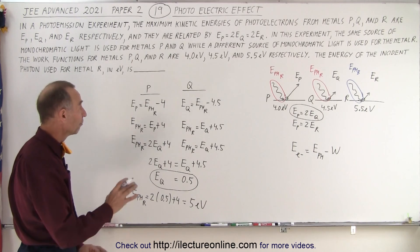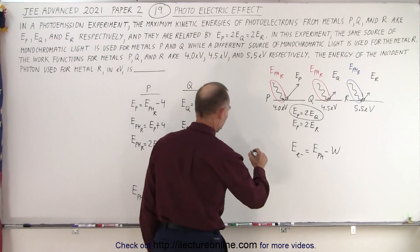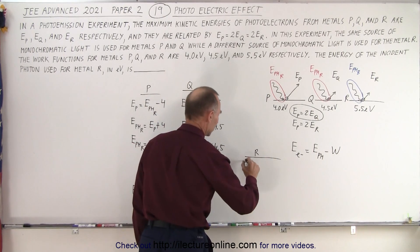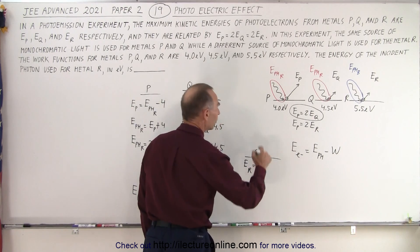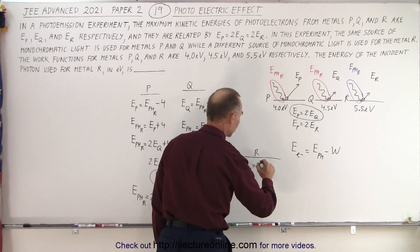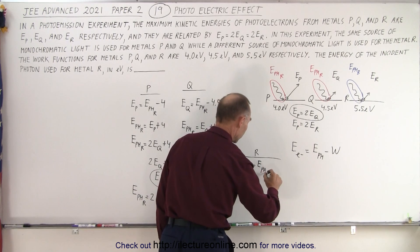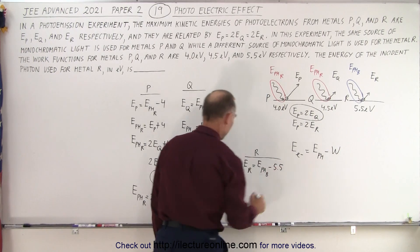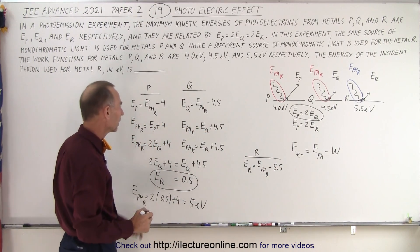Now we can do the same for metal r. The energy of the outgoing electron E_r equals E_photon_blue minus the work function, which is 5.5.